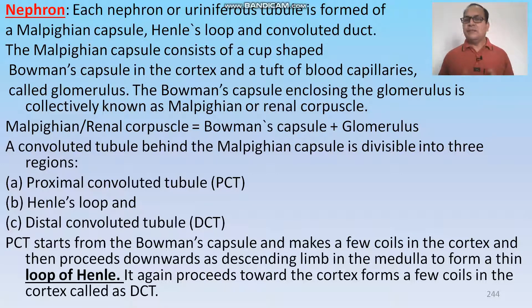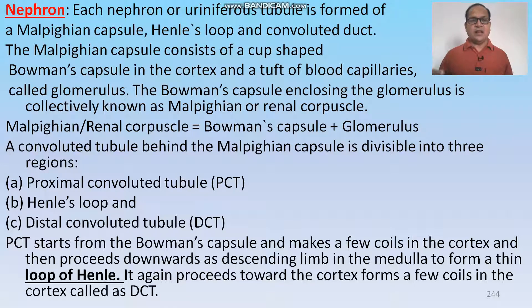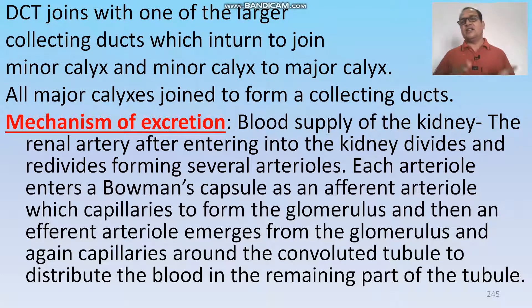The convoluted tubule behind the Malpighian capsule is divisible into three regions: proximal convoluted tubule (PCT), Henle's loop, and distal convoluted tubule (DCT). PCT starts from the Bowman capsule, makes a few coils in the cortex, and then proceeds downward as the descending limb into the medulla in the form of Henle's loop. It again proceeds towards the cortex forming a coil called DCT. The DCT joins one larger collecting duct, which in turn joins the minor calyx, minor calyx to major calyx, and major calyx joins the collecting duct leading outside.